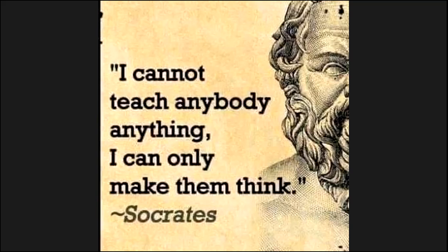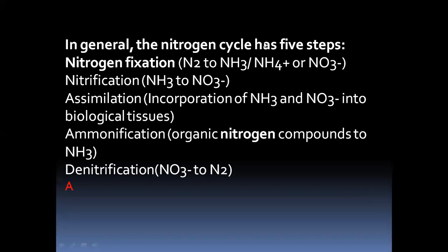The nitrogen cycle has five steps: nitrogen fixation, nitrification, assimilation, ammonification, and denitrification. That's one, two, three, four, five.